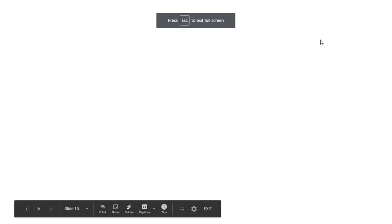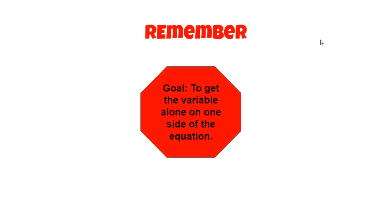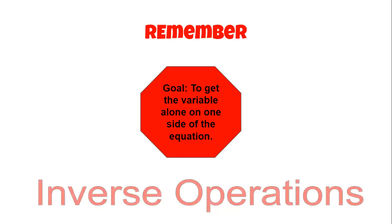To sum it up: remember, the goal is always to get the variable alone on one side of the equation. To do that, we're going to use inverse operations — the opposite of the operation that's happening to cancel it out. Make sure you remember this as you do your practice today. Good luck.